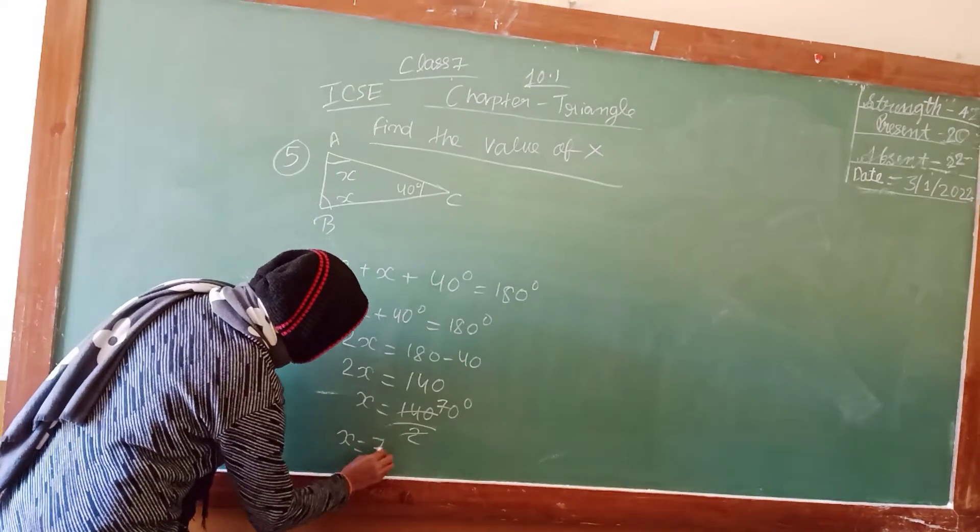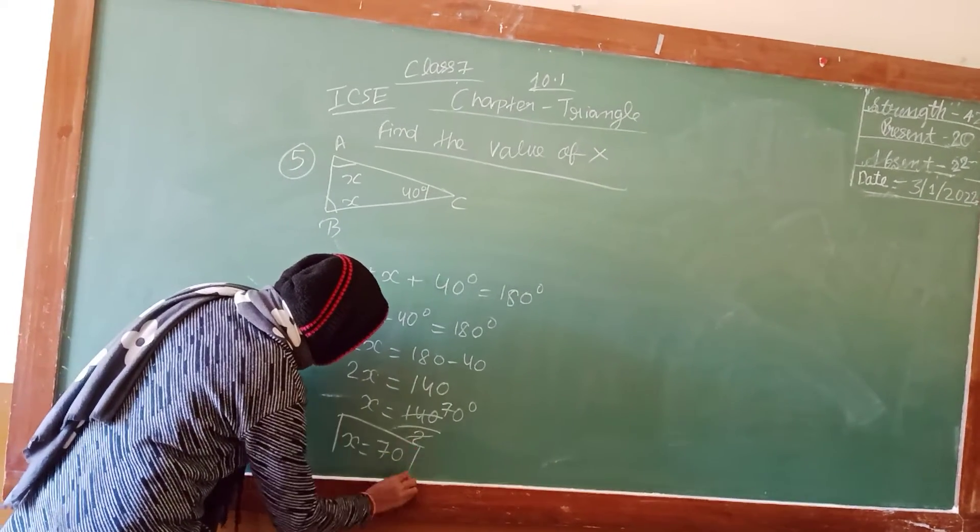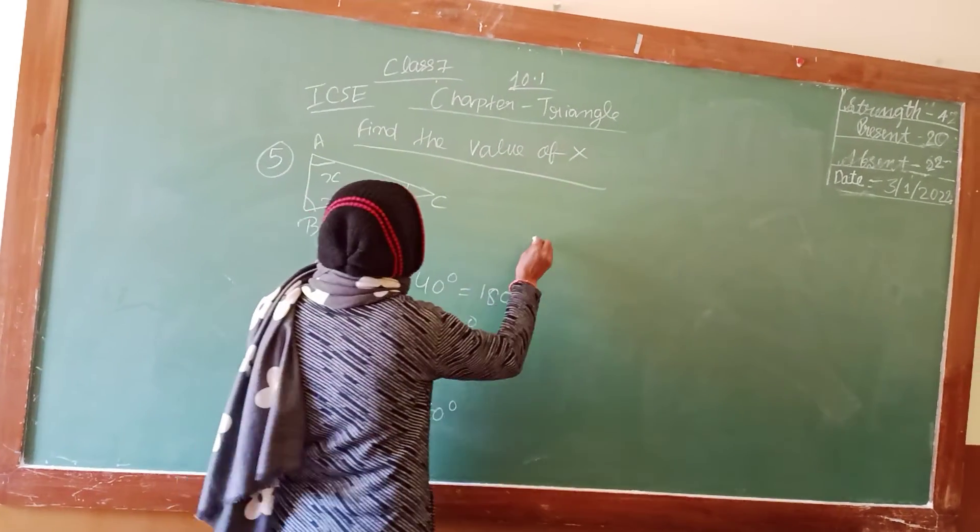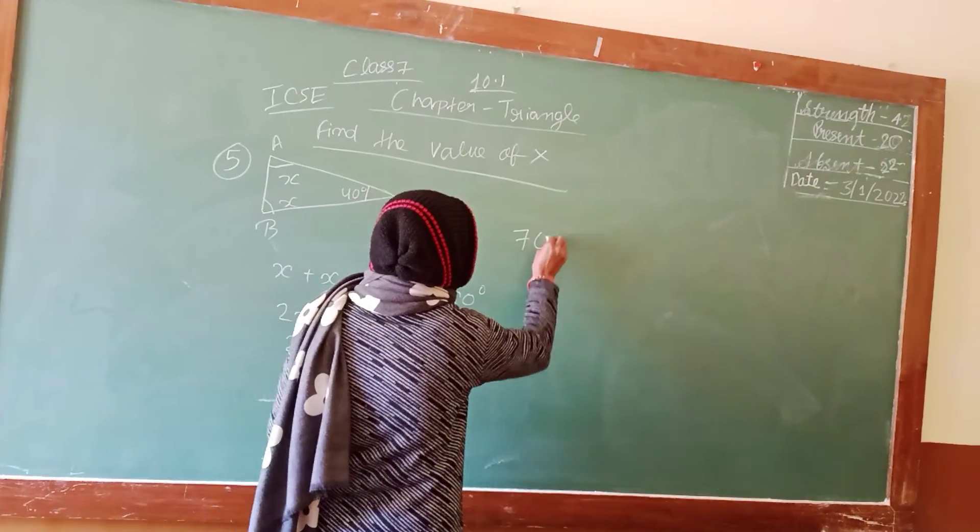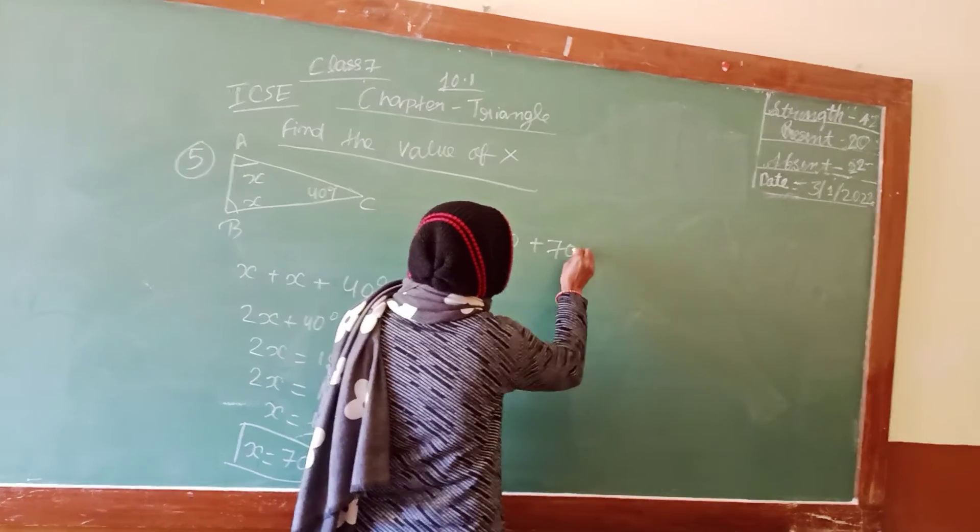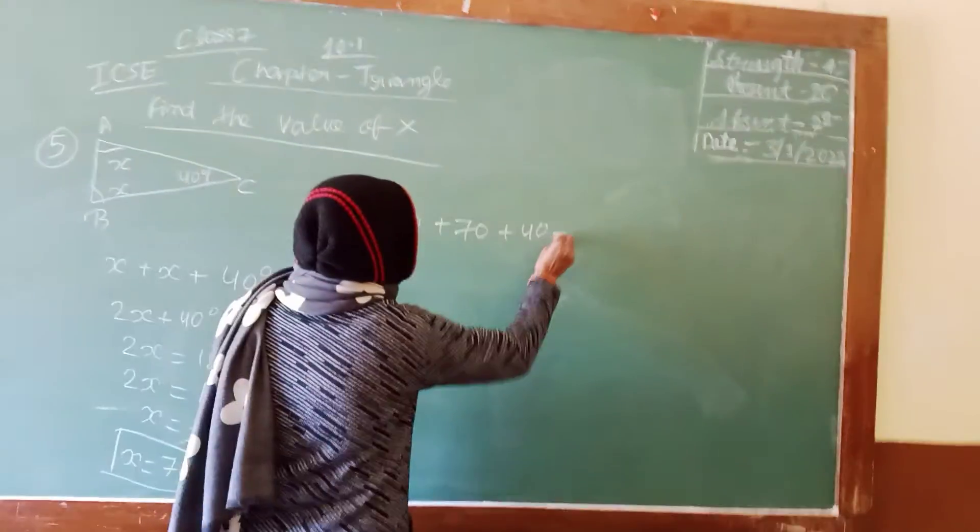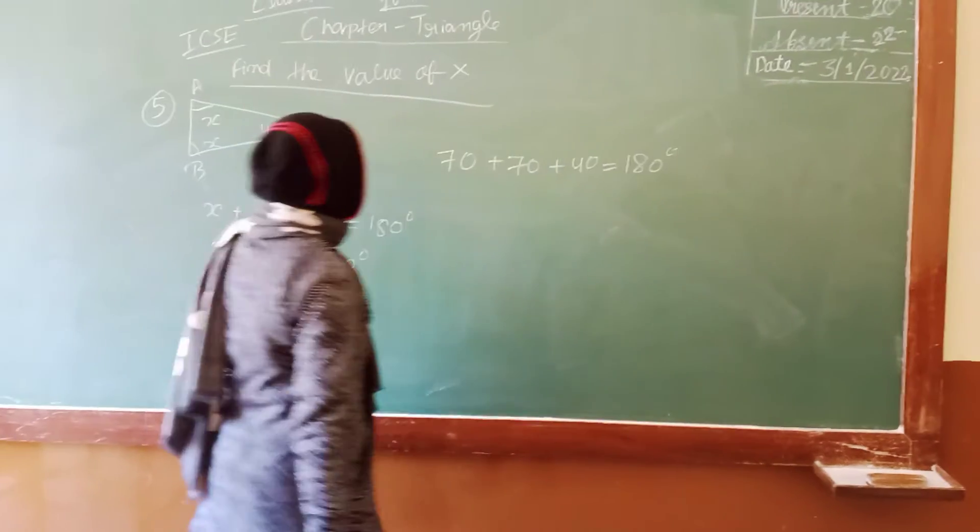So here we can check: 70 plus 70 plus 40, so that equals to 180. So hence proved that these three angles are making a triangle.